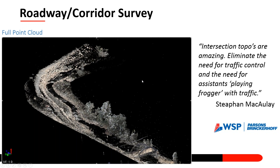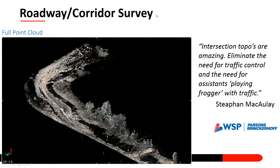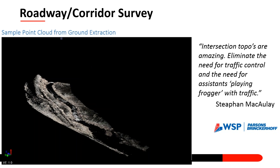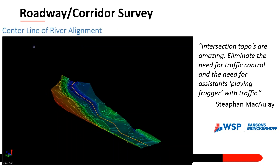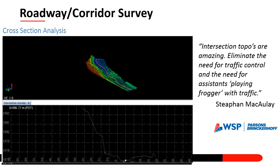Here is a full point cloud of an area along a street with some high banks. Parsons Brinckerhoff was able to survey without putting their survey crew in the road, and they also didn't have to navigate these steep slopes. The point cloud was then sampled, the ground was extracted, and a TIN mesh was created based on the ground only. At the end of the day, you can see that cross sections and all the deliverables and tools you're currently used to can still be used here — you're just collecting data in a different manner, more efficiently and quicker, while keeping survey crews out of harm's way.